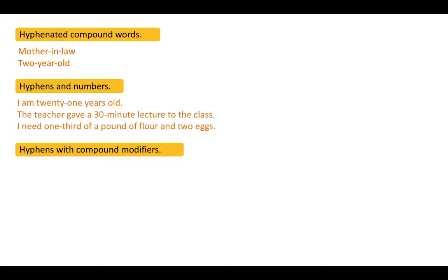Hyphens with compound modifiers. A compound modifier is just two words that work together as one adjective. The hyphen is used to show the reader that the words work together to describe the noun. The noun generally comes after the adjective. However, if it comes before, then we leave the hyphen out.